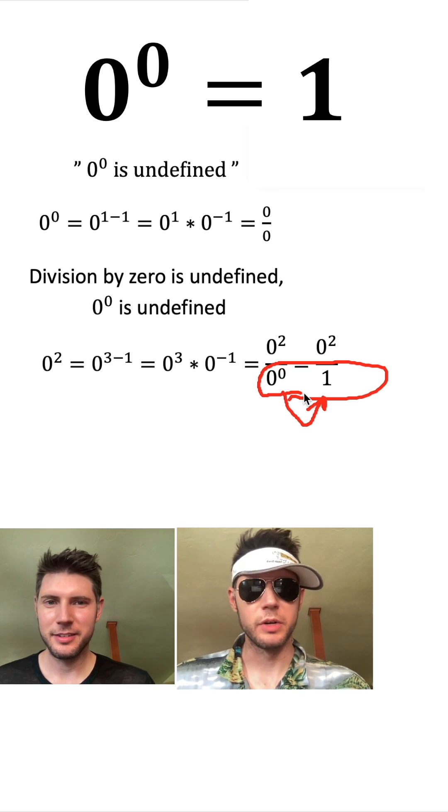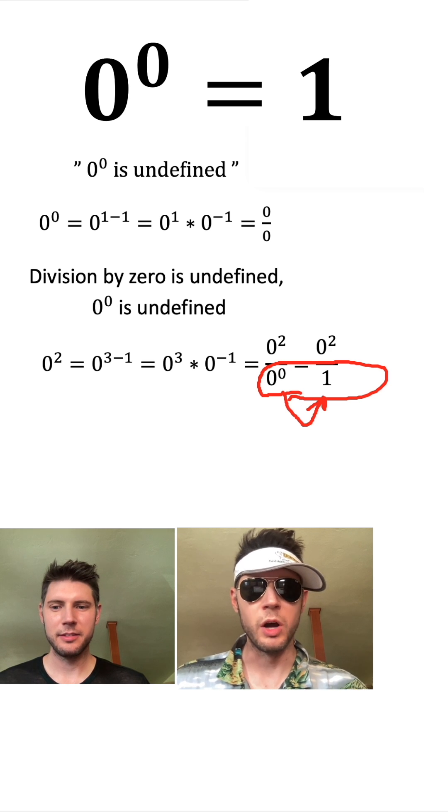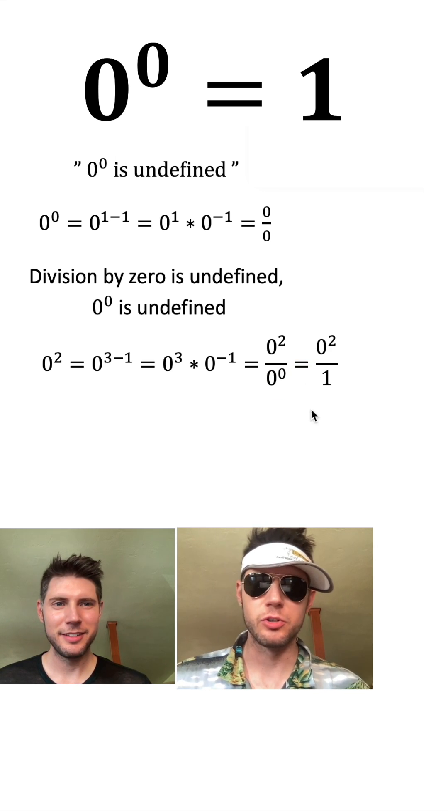Wow, I was not correct when I said 0^0 is undefined. Instead, I should have said 0^0 equals 1. Going forward, I will now say that because that is what is correct.